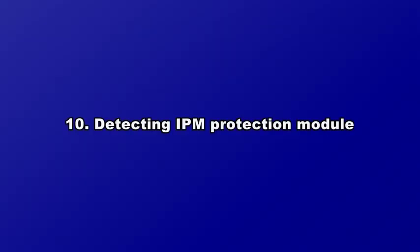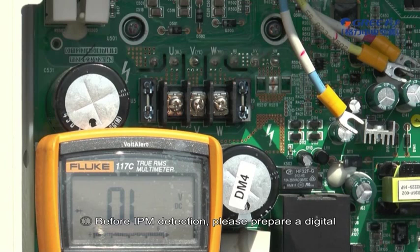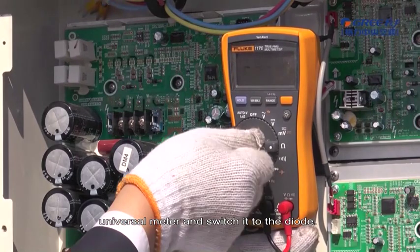Detecting IPM Protection Module. First, before IPM detection, please prepare a digital universal meter and switch it to the diode.